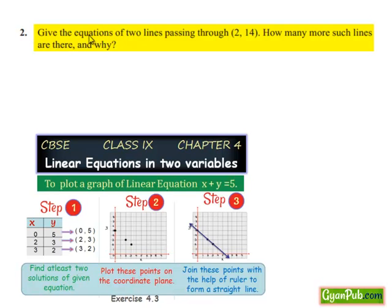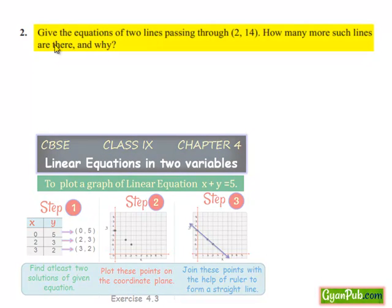Let's see question number 2. Give the equations of two lines passing through 2,14. How many more such lines are there and why?